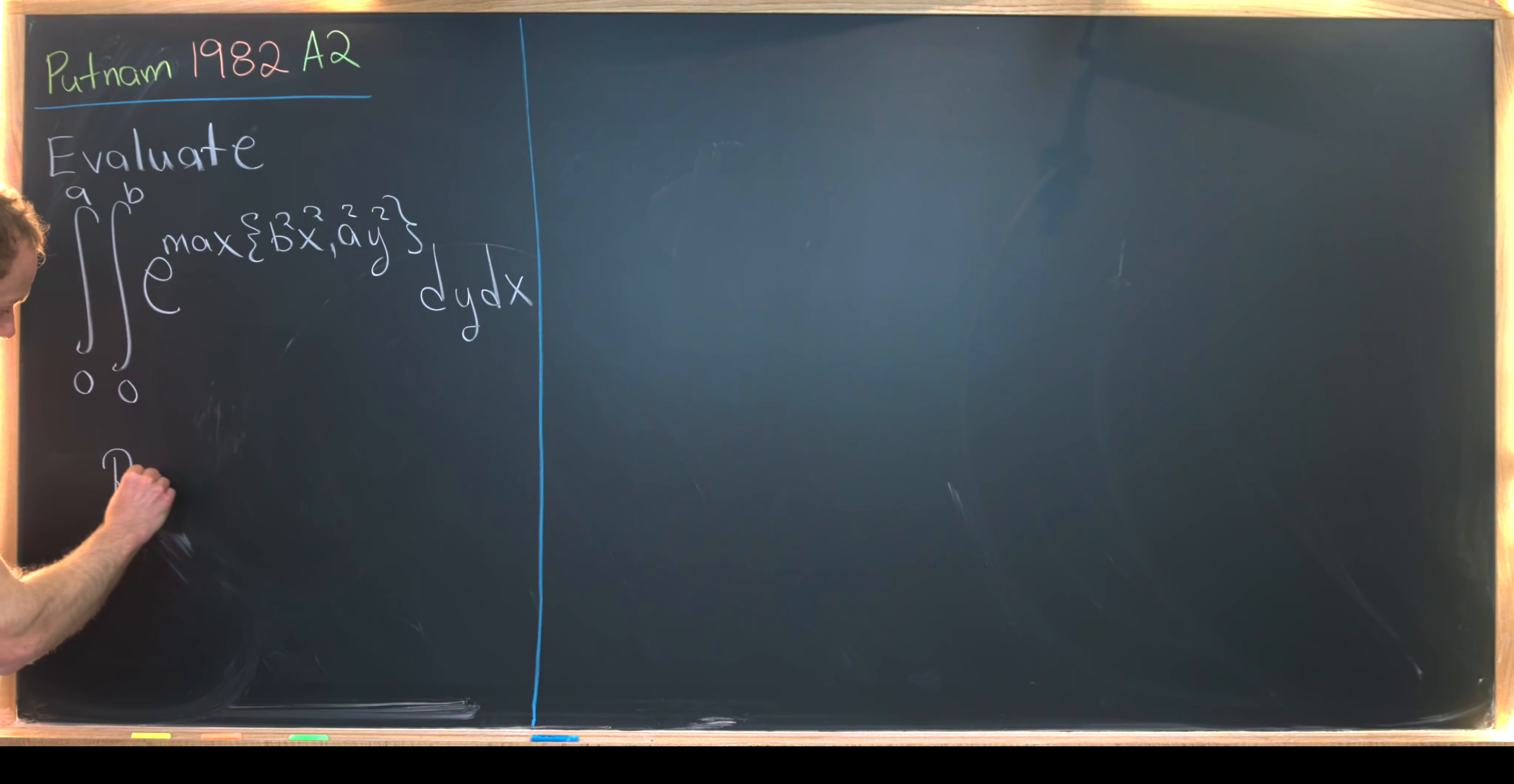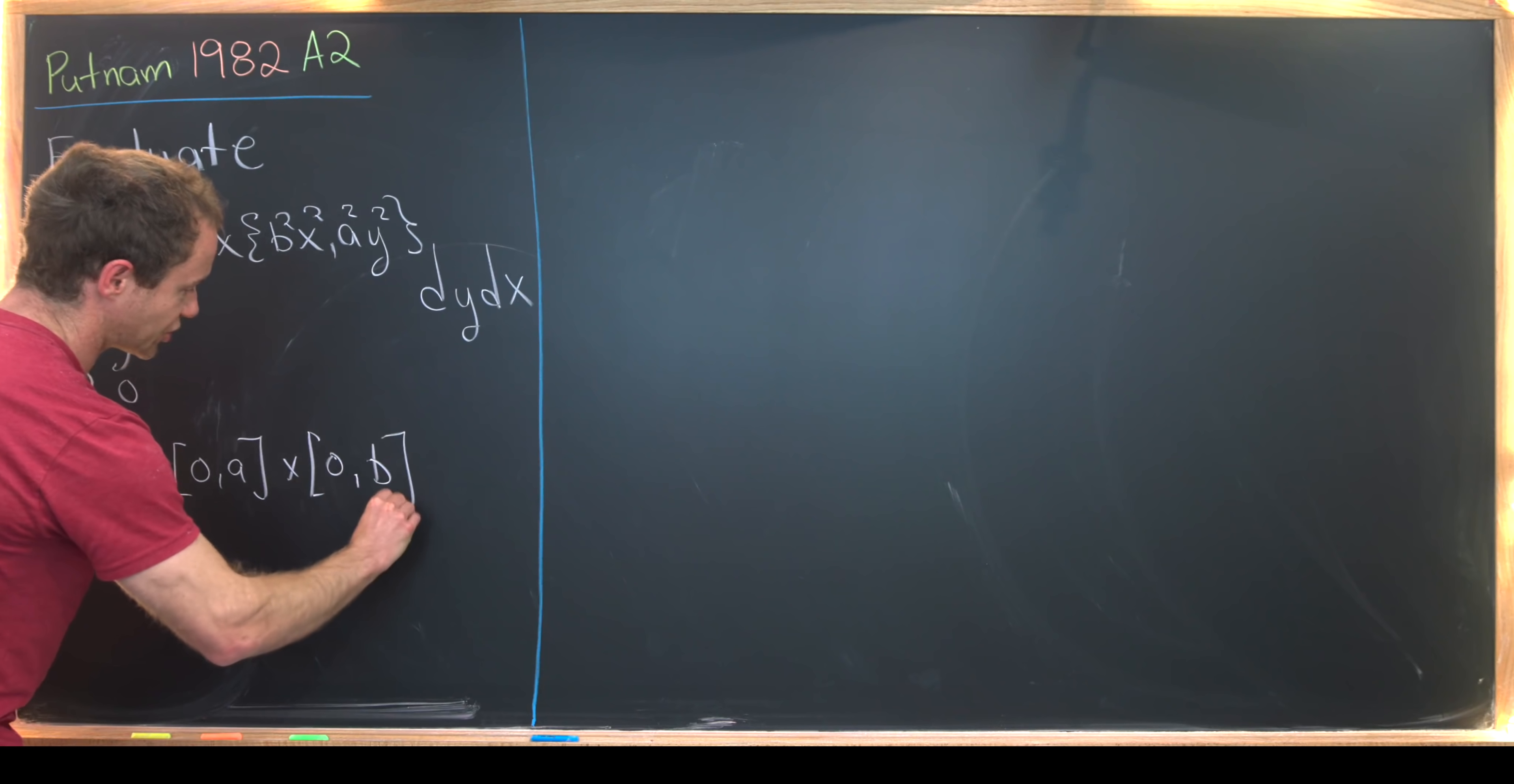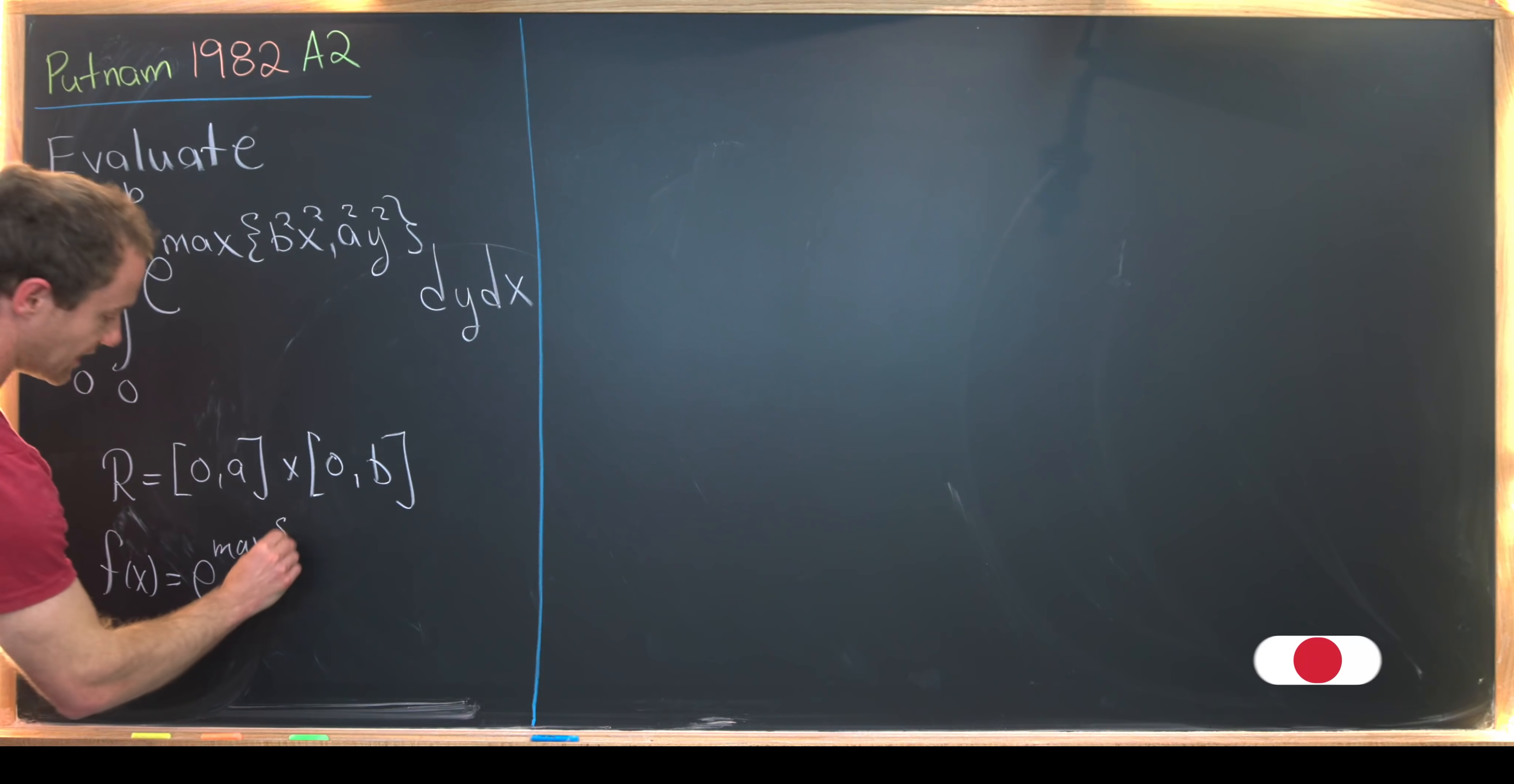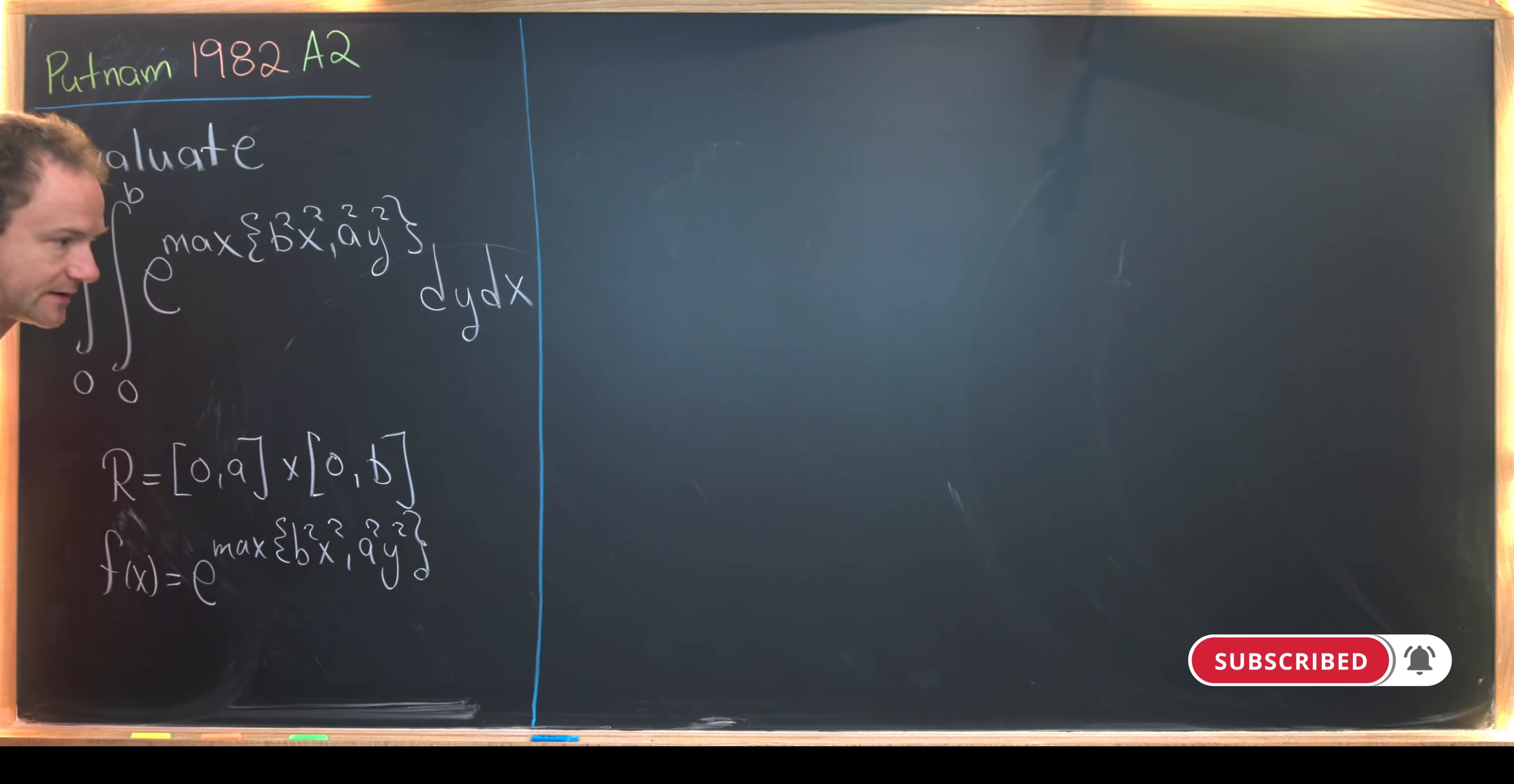I'm going to set R equal to the rectangle 0 comma A cross 0 comma B. So we'll draw a picture of that, but that happens in the X, Y plane. Furthermore, I'll set F of X equal to this function that we're playing with. So e to the maximum of this stuff. So we've got B squared, X squared, A squared, Y squared like that.